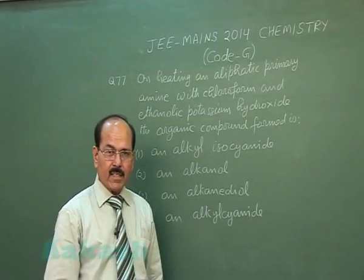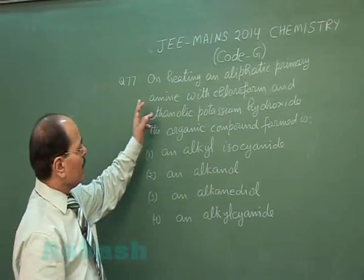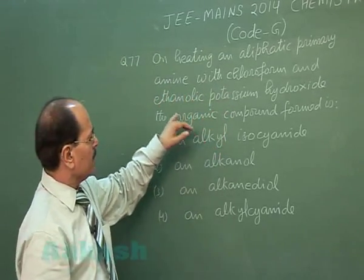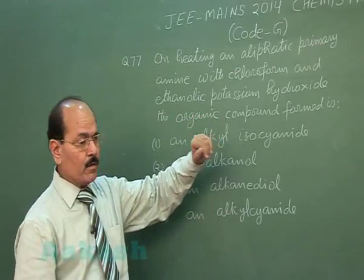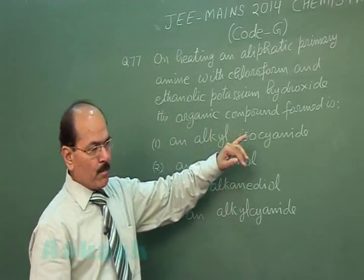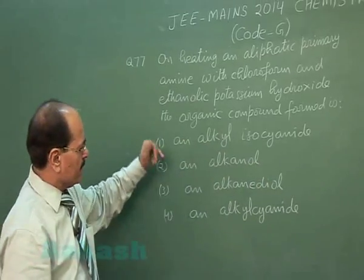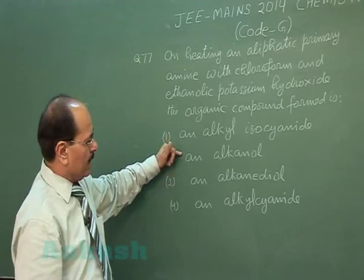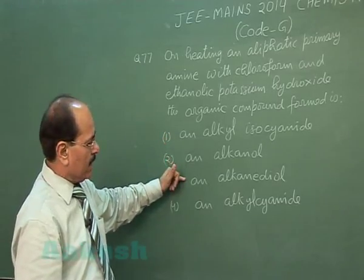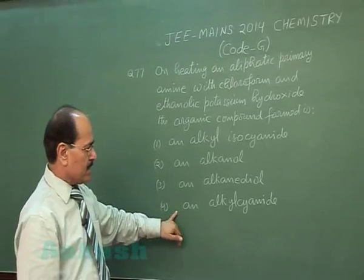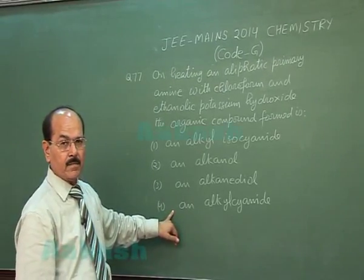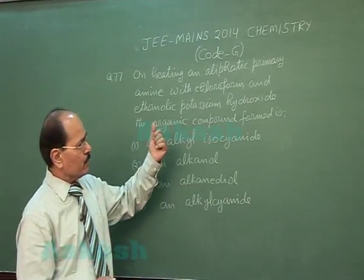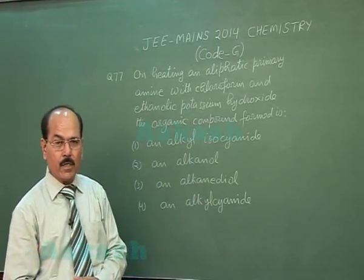Question number 77 says: on heating an aliphatic primary amine with chloroform and ethanolic potassium hydroxide, the organic compound found is — four options are given: an alkyl isocyanide, an alkanol, an alkane diol, and an alkyl cyanide. What actually happens when aliphatic primary amine reacts with chloroform and ethanolic potassium hydroxide?